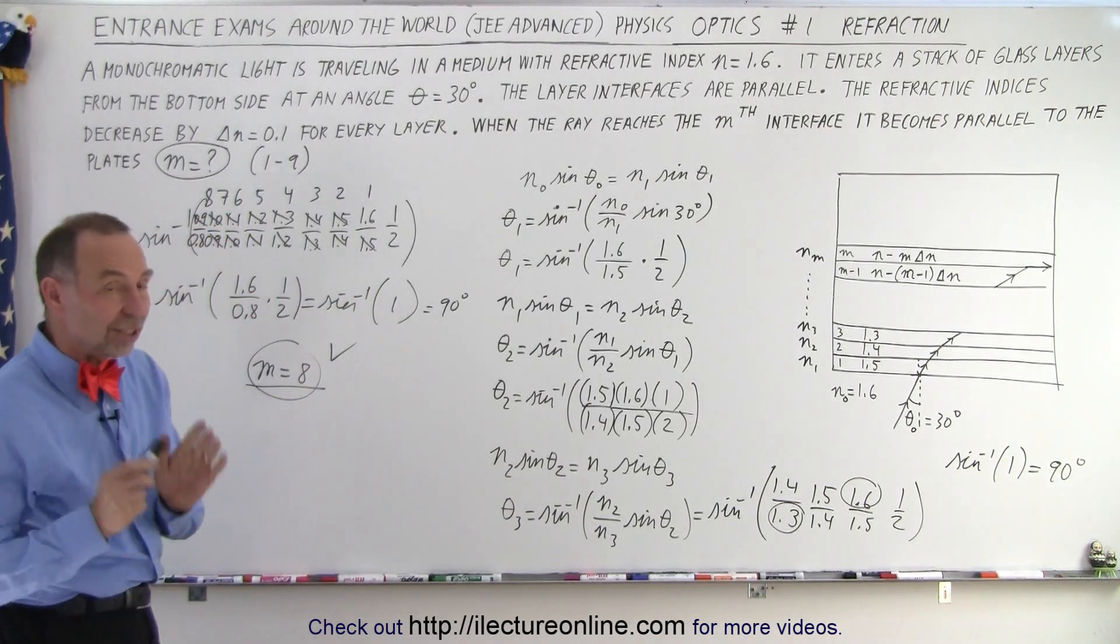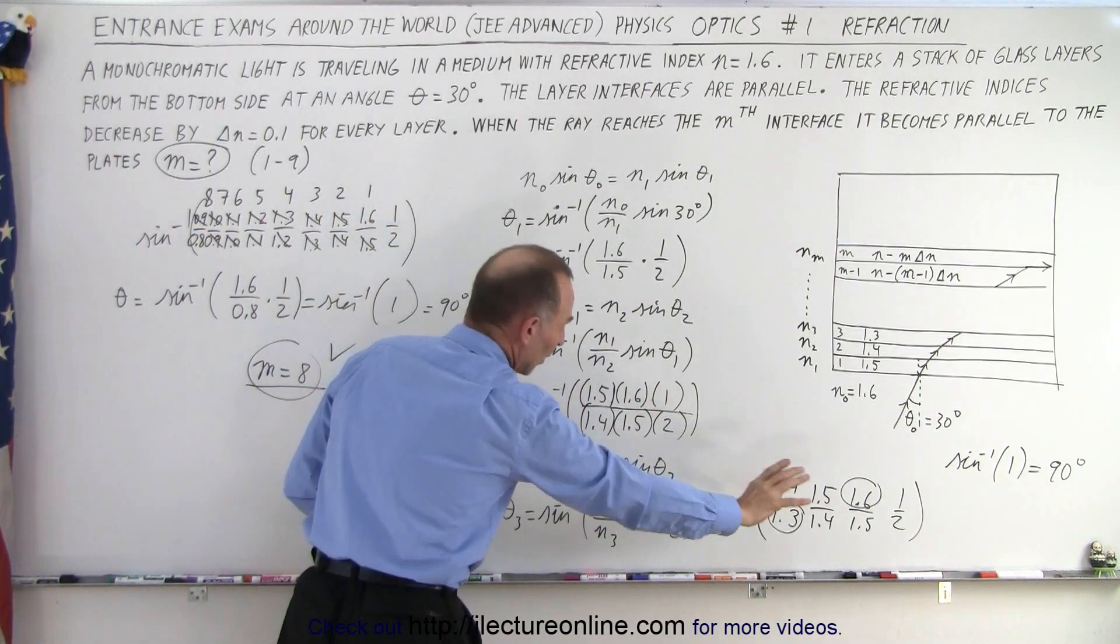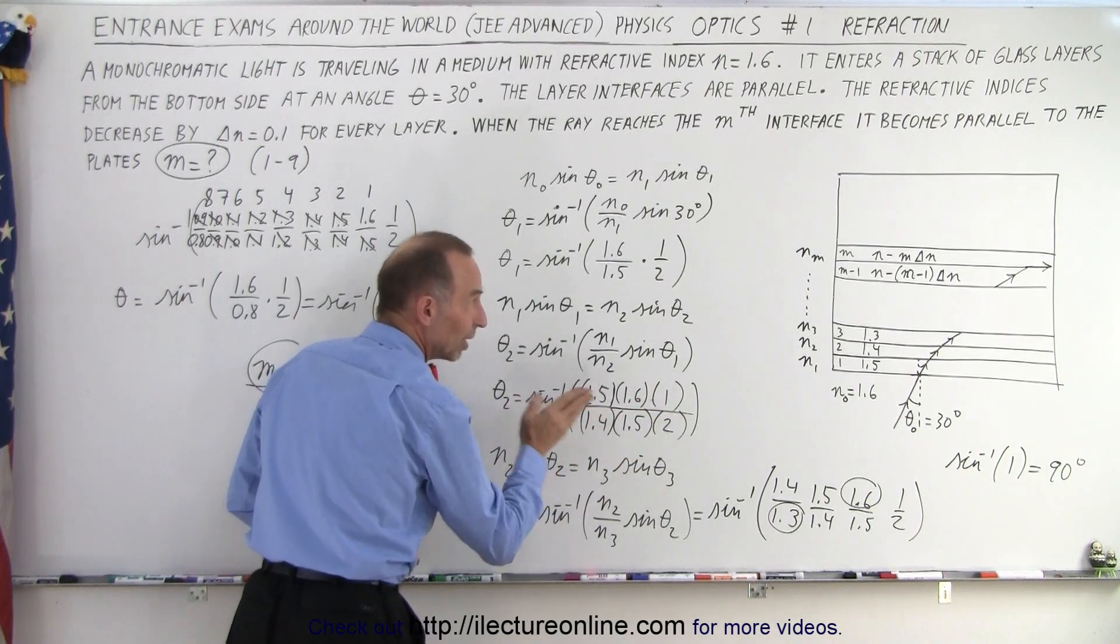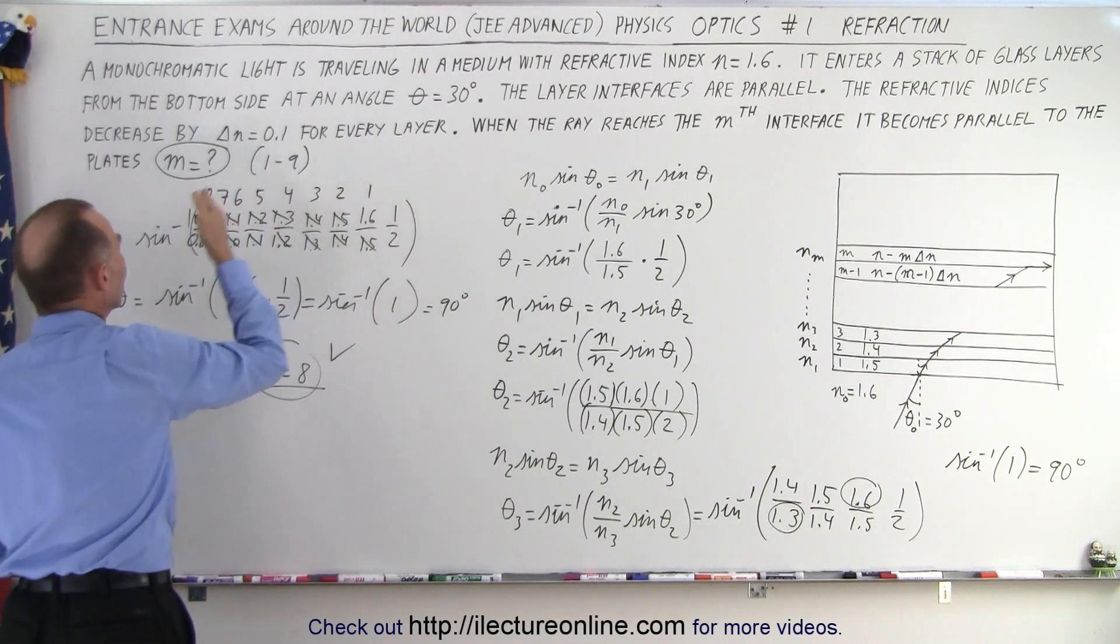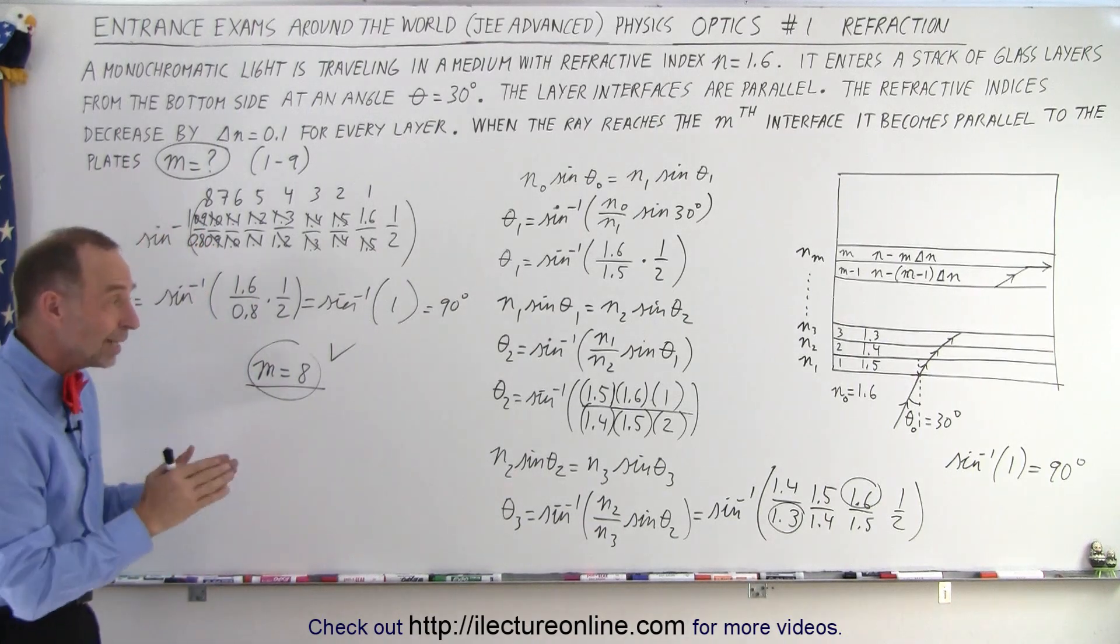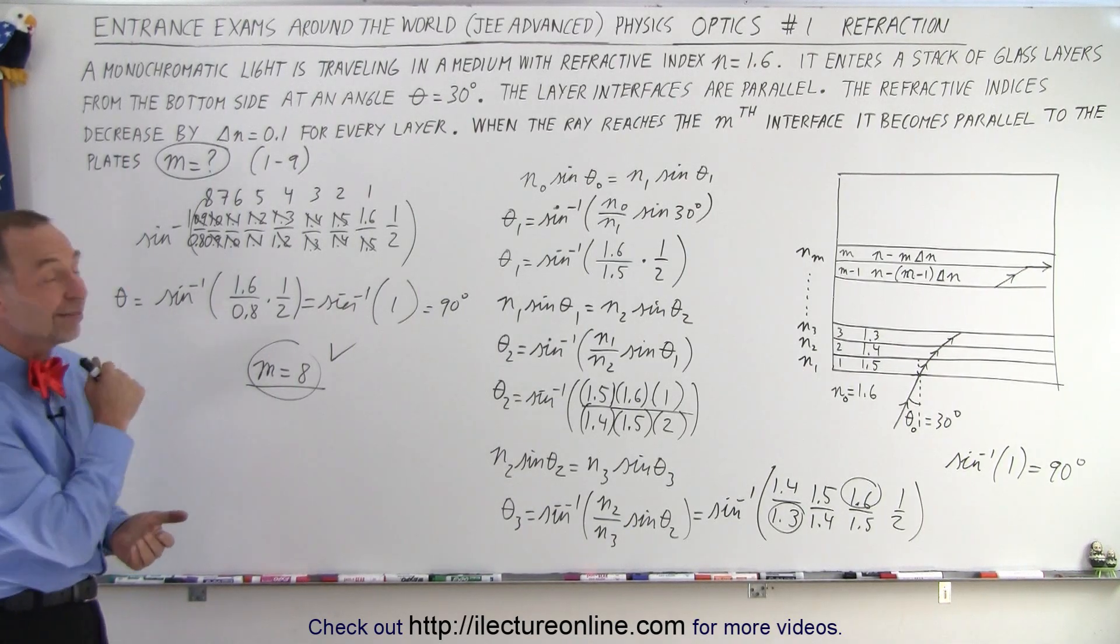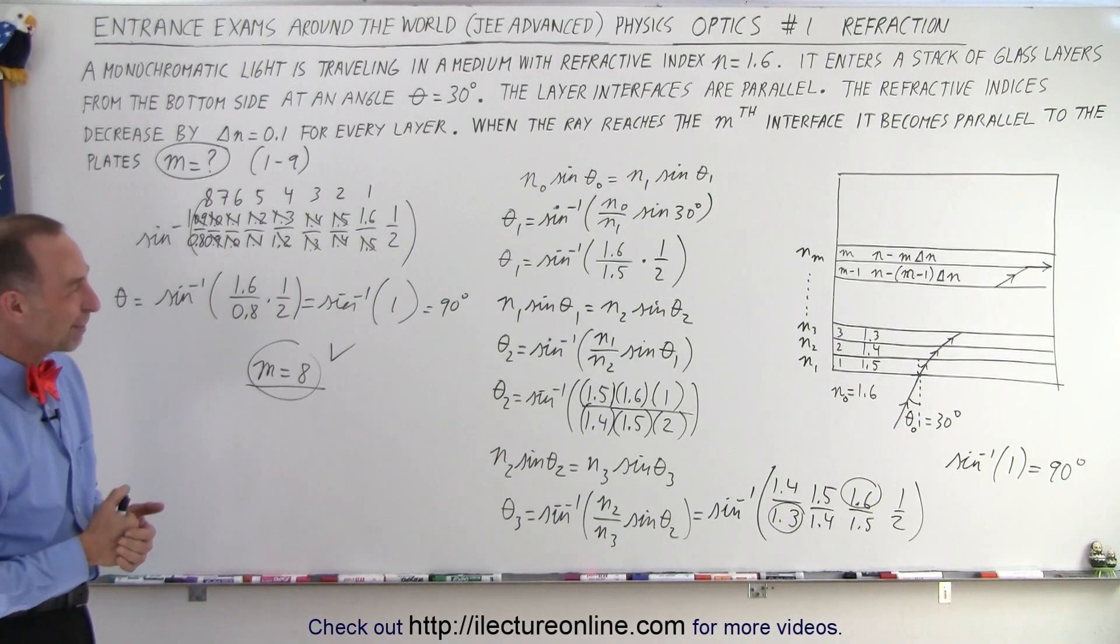You can see that once you see the pattern, after you probably get to this point, you can begin to see the pattern. You don't have to do it one more time, you can just keep doing that until you end up with 1.6 over 0.8 times 1 half gives you 1. The inverse sine of 1 is 90 degrees, the ray is now parallel, and then how many of these do you need to go from 1.6 to 0.8? M equals 8, and you're done with the problem. If you see it quickly, you can get it done in just a few minutes. If you don't see it, you might sit there for a long time figuring out what in the world you need to do. But that is how it's done. Crazy problem, huh?